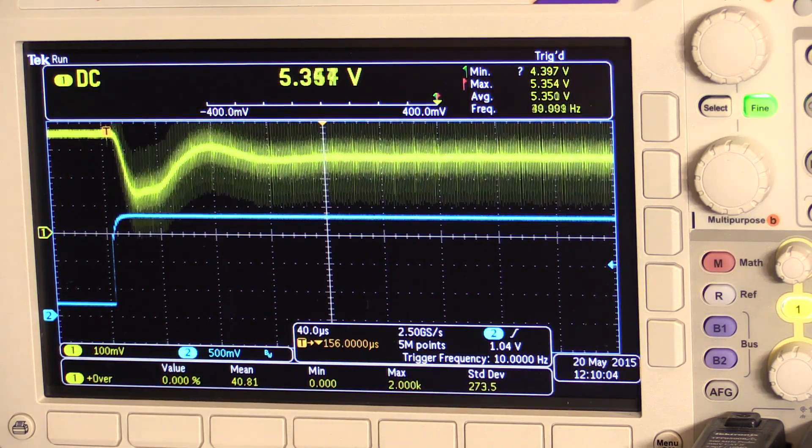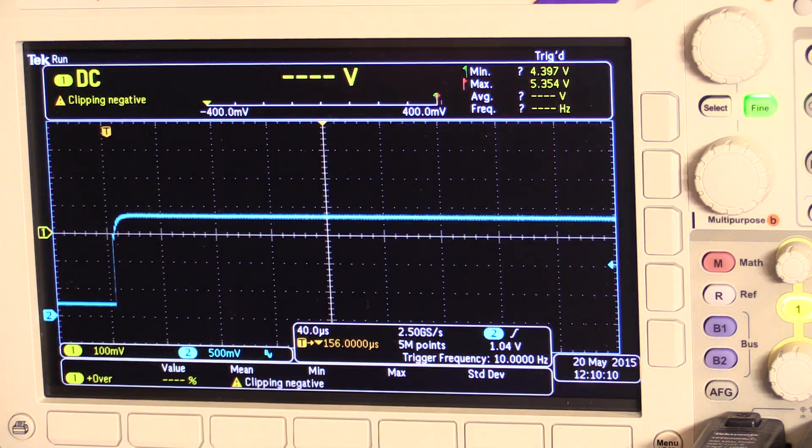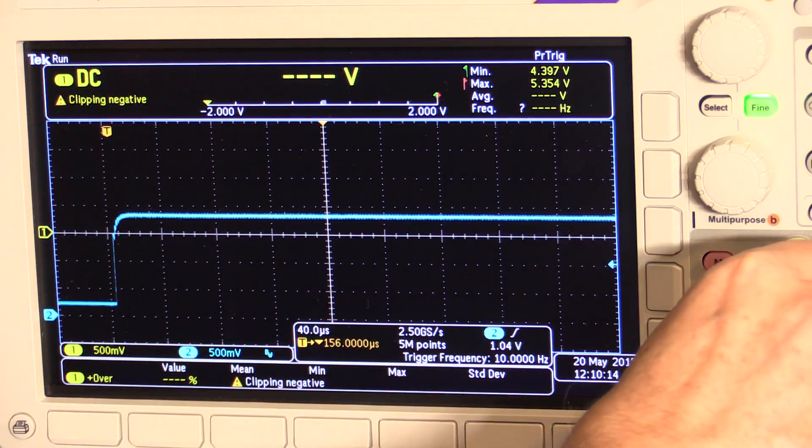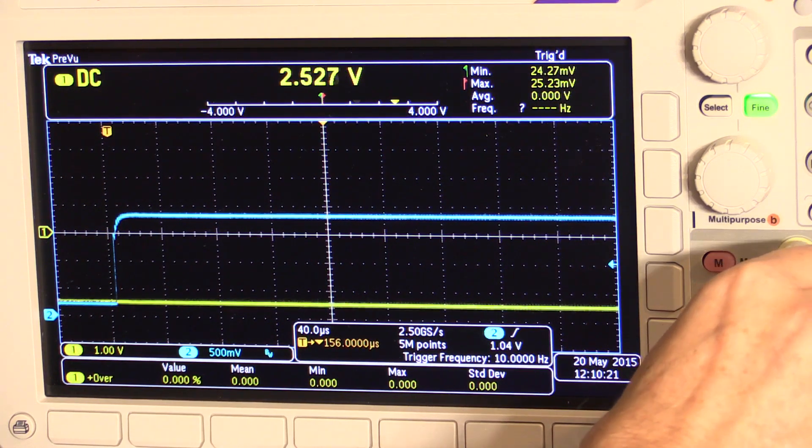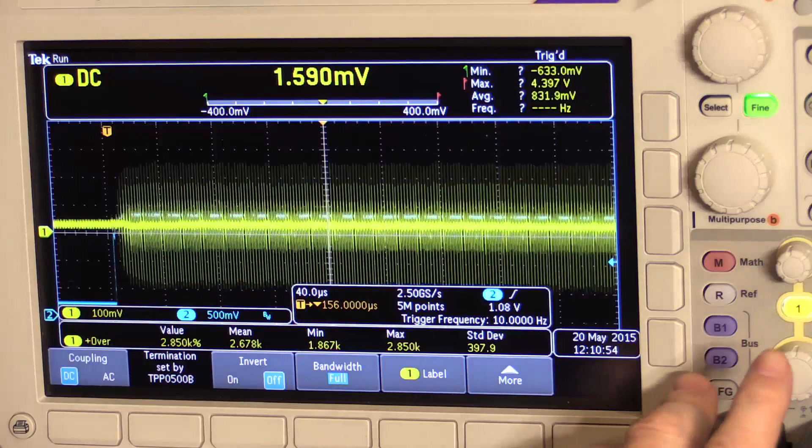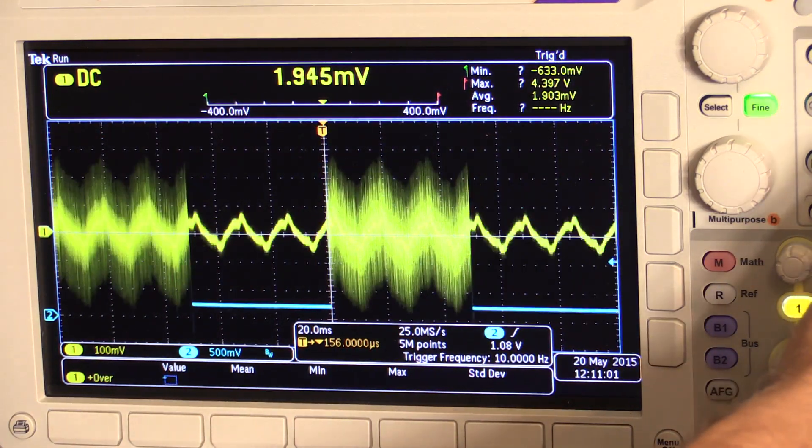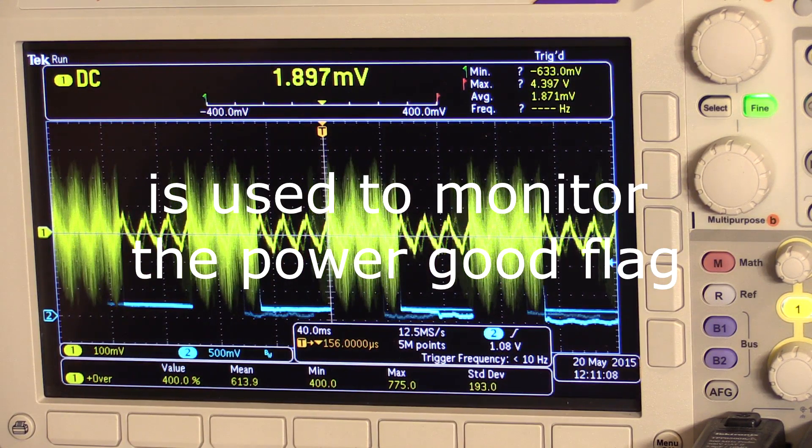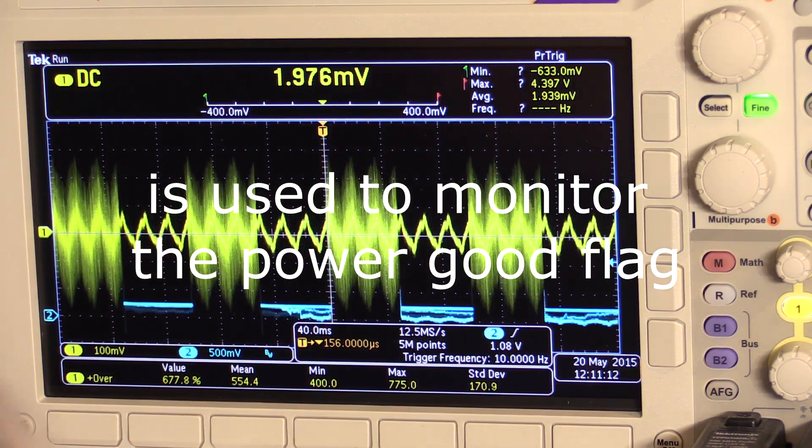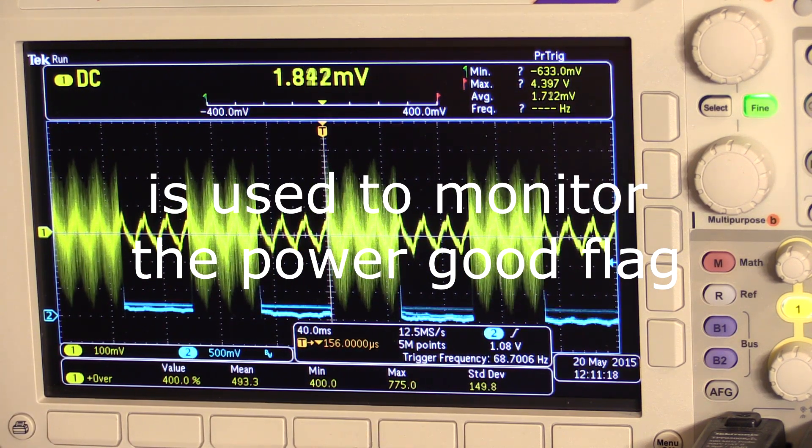So the next thing we're going to look at here on the board is the PG, it's marked as PG on the board. So let's go see if that's doing anything interesting. So I think that gives us a very interesting trace to have a look at. Again, we'll go back and have a look in the manual what that actually is in a little bit.